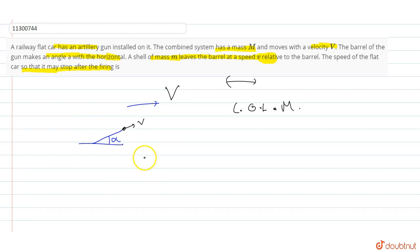What is the initial momentum? (M + m) into V. And the final momentum - the flat car's speed will be zero.